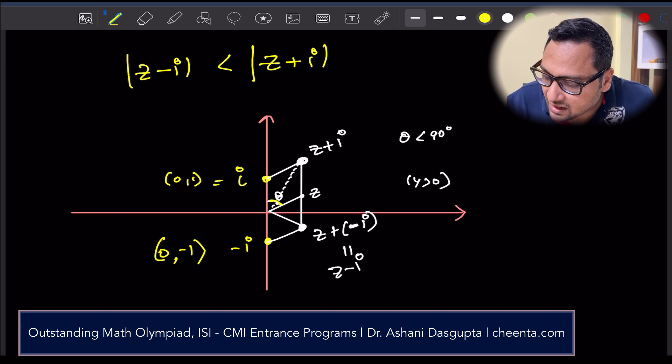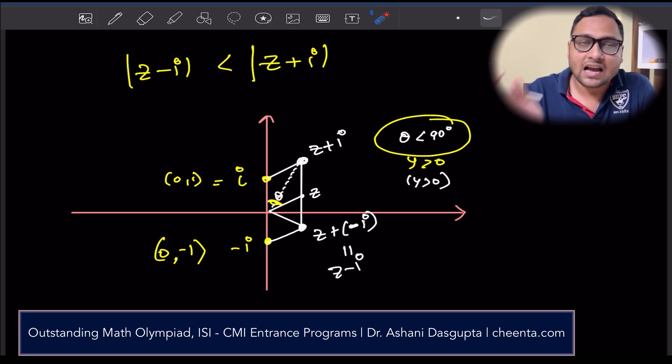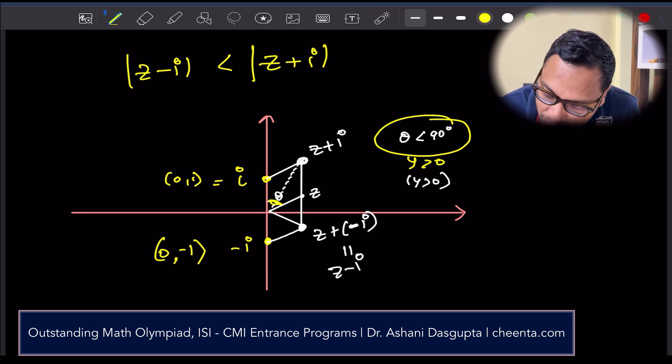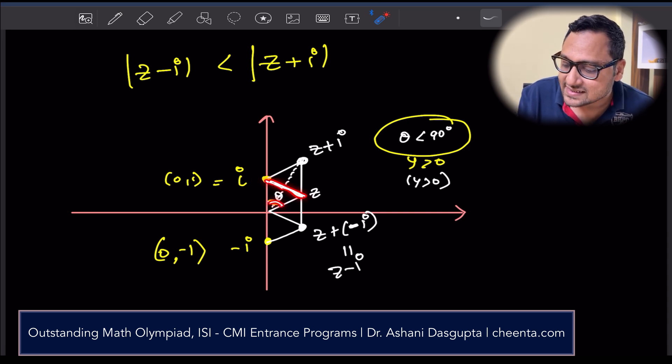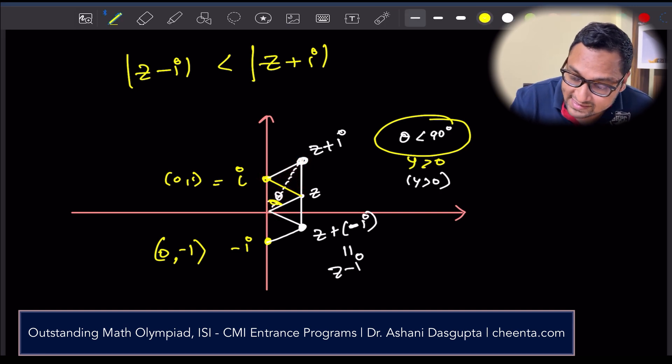Notice theta is less than 90 only when y is greater than 0. If it is above x-axis only then this is less than 90. This total thing is 90. If it's above x-axis only then it becomes less than 90. The diagonal opposite to something that's less than 90, diagonal opposite to this is smaller than this other diagonal.